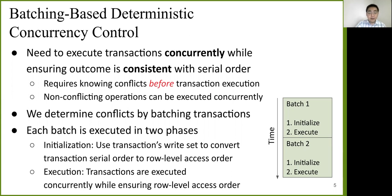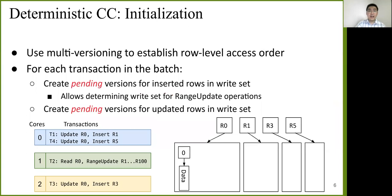In the initialization phase, we use transactions write set to convert the transaction serial order into row-level access order. So that in the execution phase, transactions are executed concurrently while simply ensuring the row-level access order. In our work, we use multi-versioning to establish row-level access order.